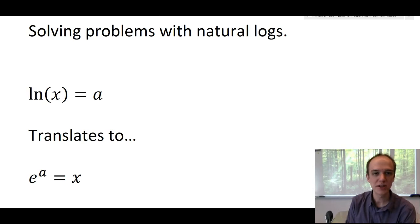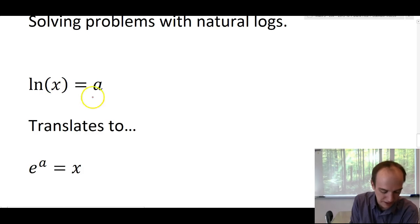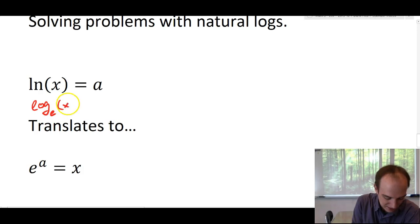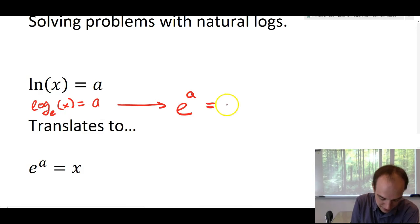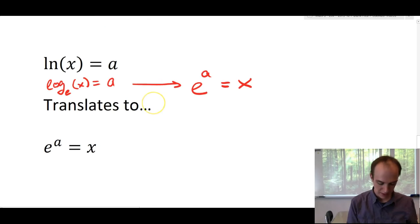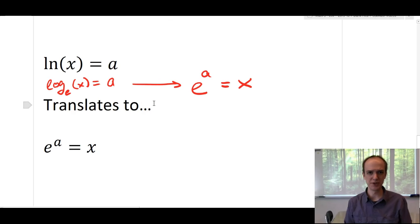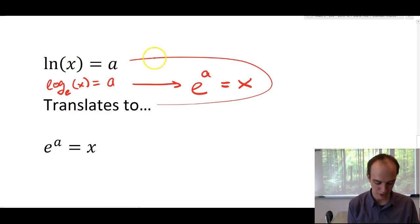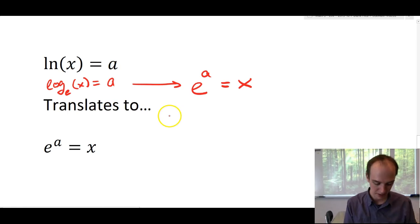The translation that you need to know is this. If the natural log of x, if you have something written like this, then this is really log base e of x is equal to a, which would translate to, since e is the base, that has to translate to e to the a equals x, which is what we've written down here as well. So, as long as you're confident in your log translations, then natural logs are nothing new. If you're not sure about how to translate this log, then it's not a natural log you're having a problem with. It's just logarithms in general. You should go back at video and go back to the previous work and work on that. All right, let's keep working.